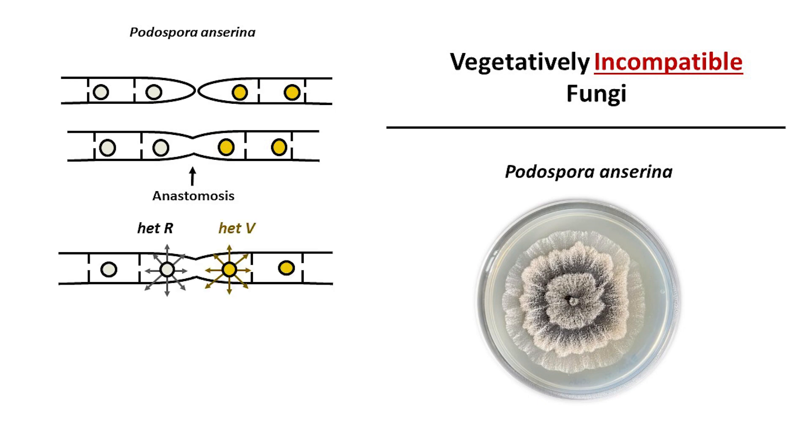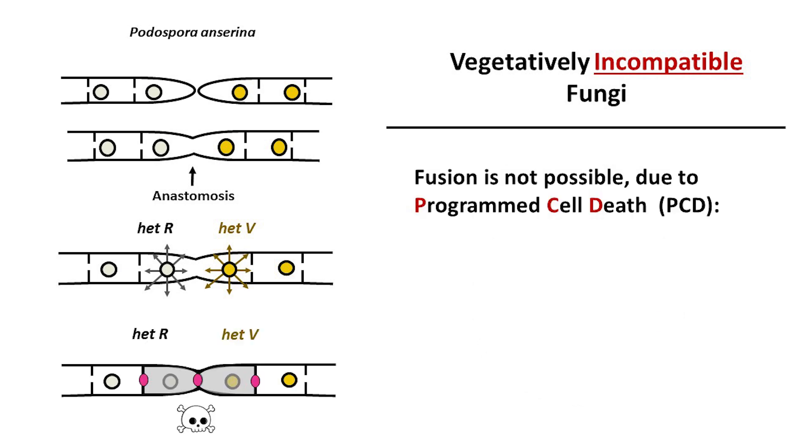After anastomosis, nuclei of two isolates start expression of het genes. Expression of incompatible het genes in the heterocarion makes fusion impossible due to programmed cell death.